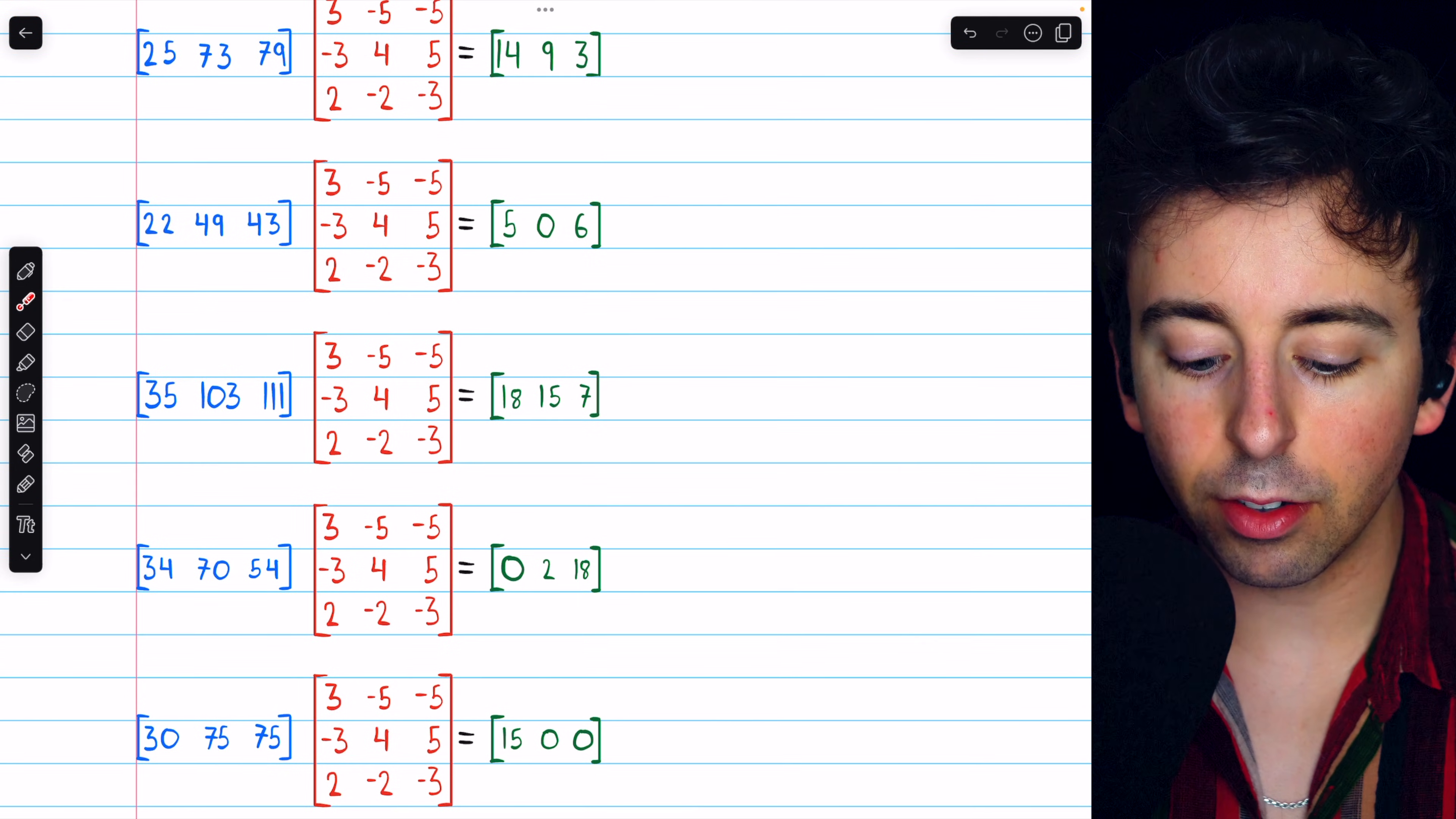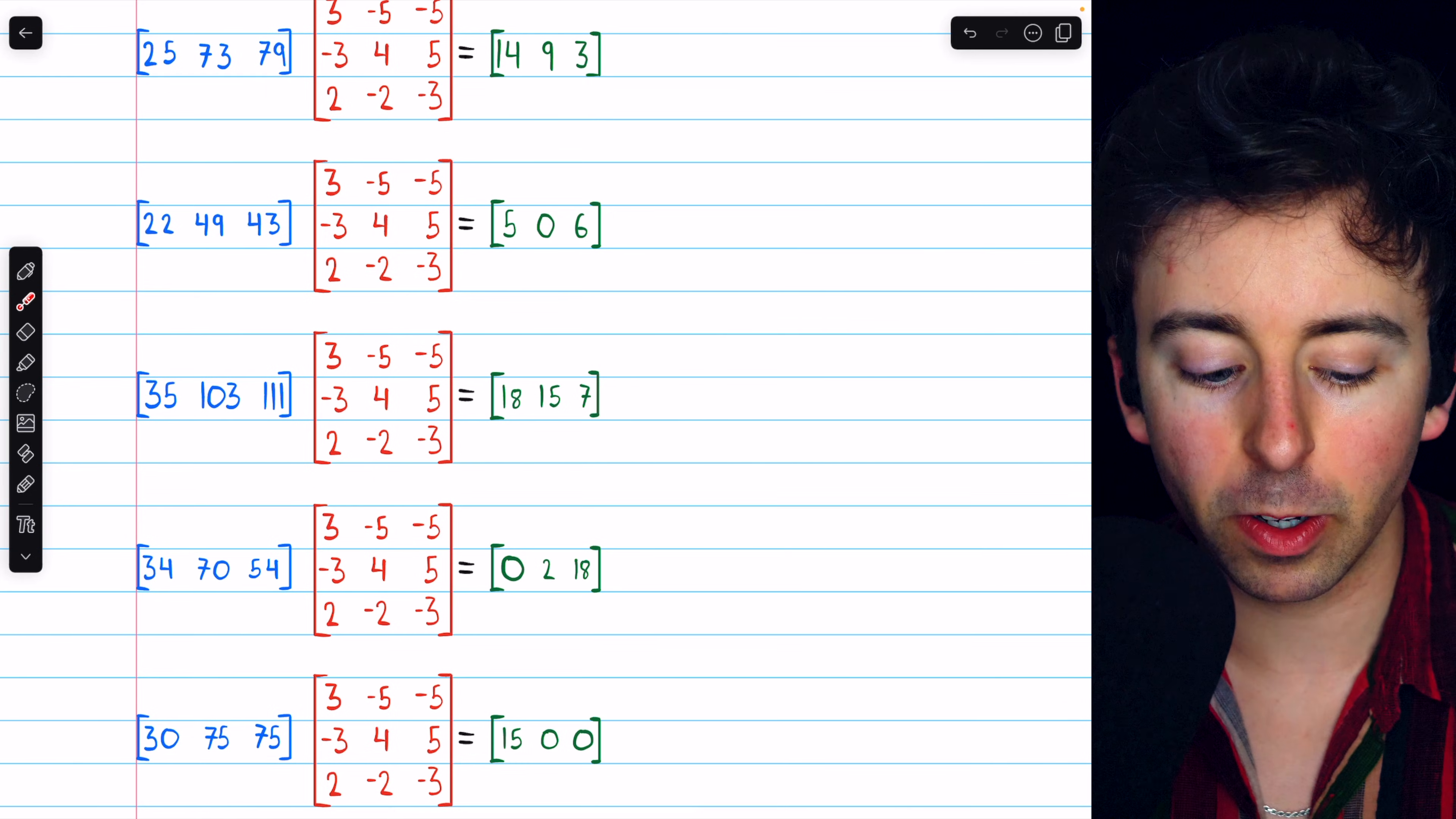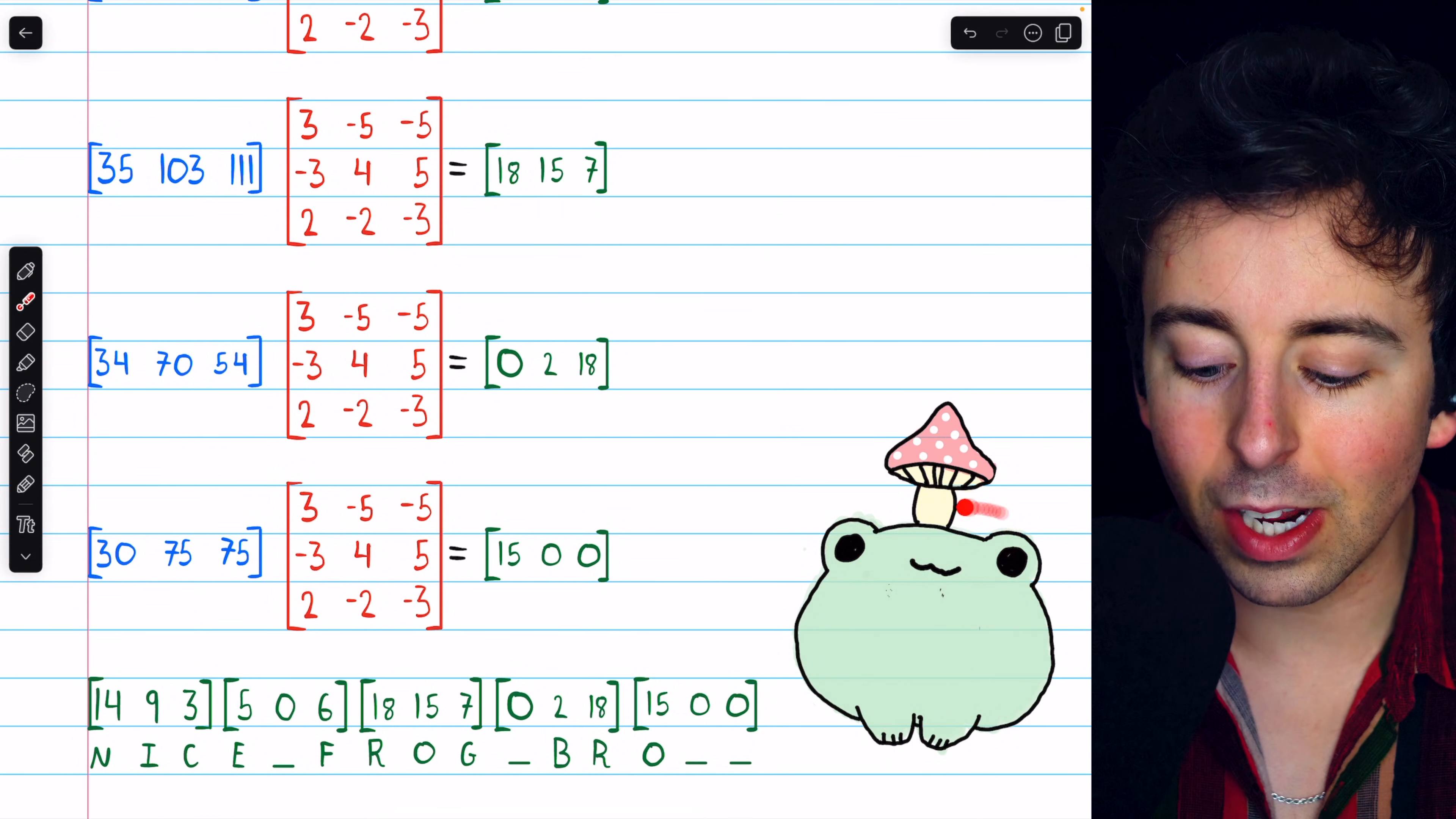Taking all of these coded row matrices, putting them in sequence, and then turning the numbers into their corresponding characters, we arrive at the decoded message nice frog, bro. Just look at that cutie patootie.